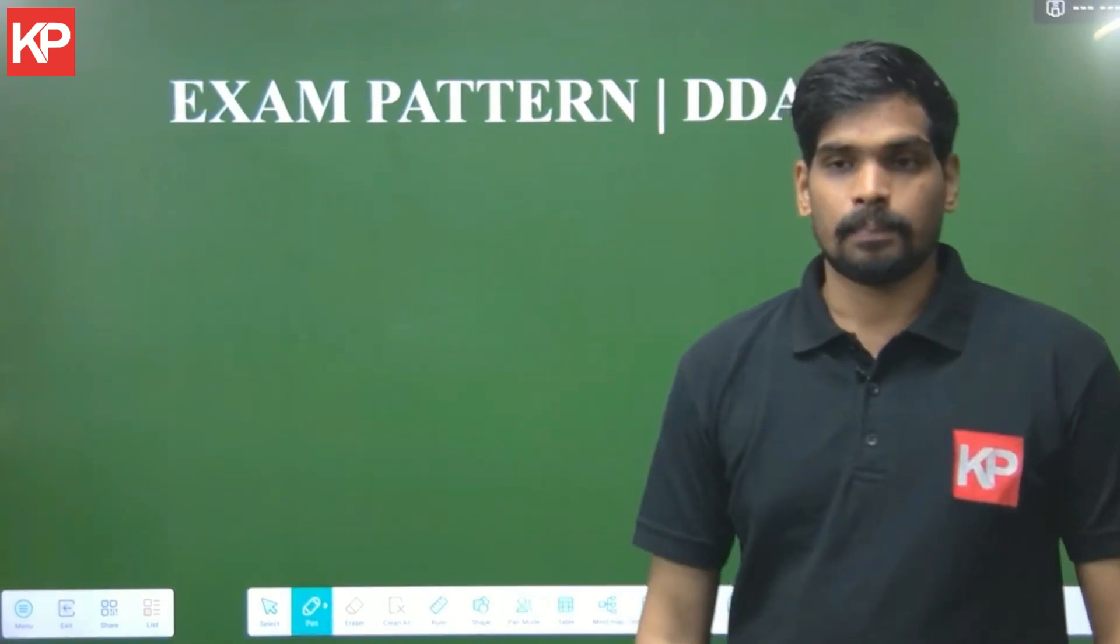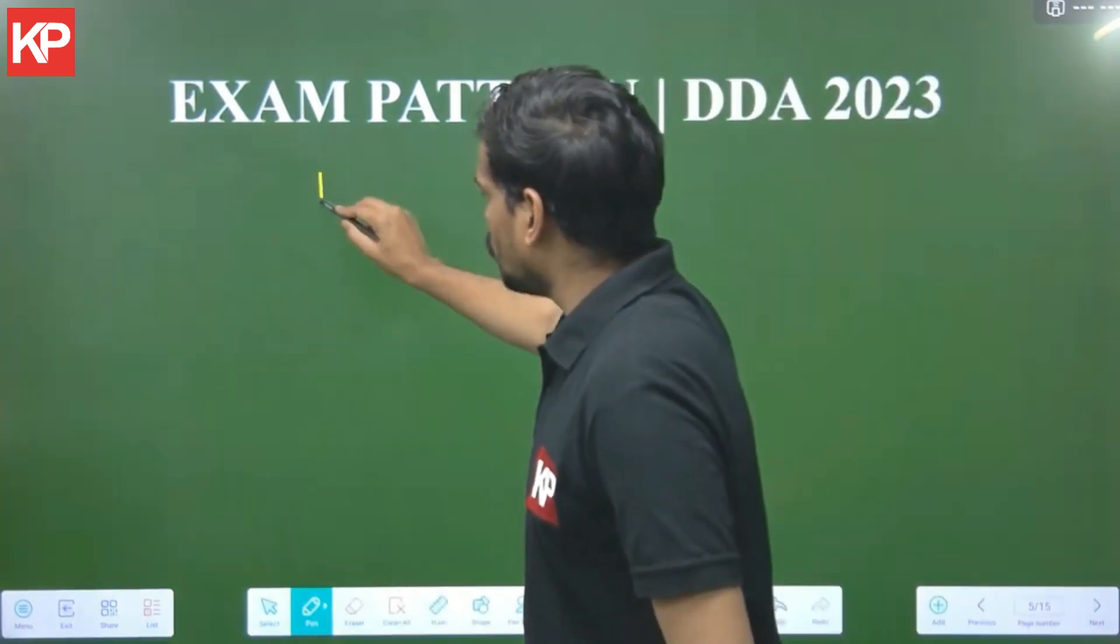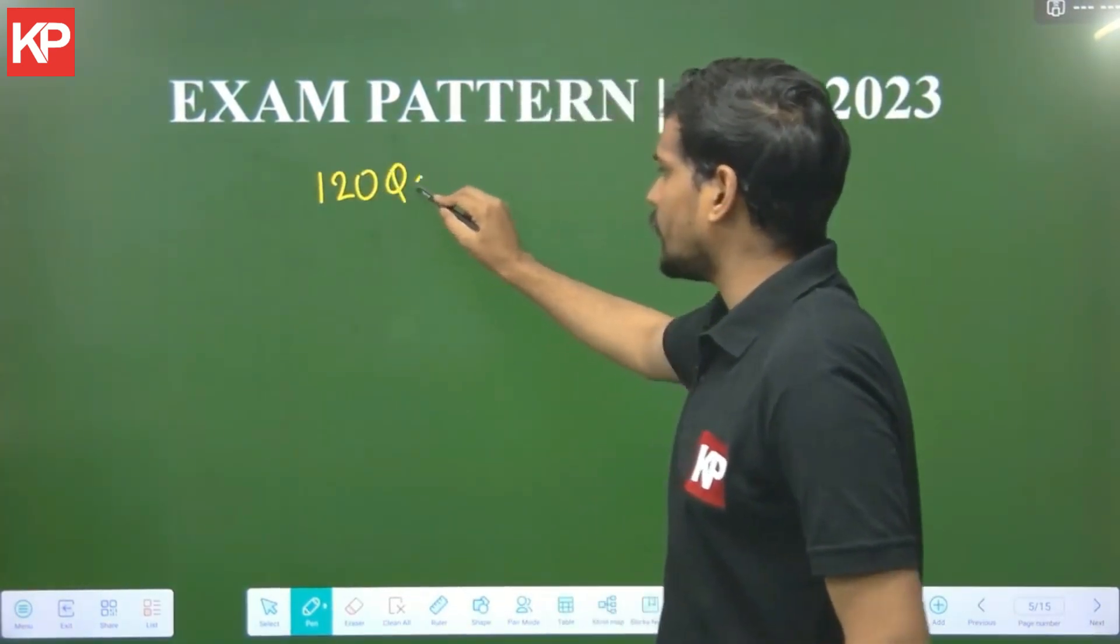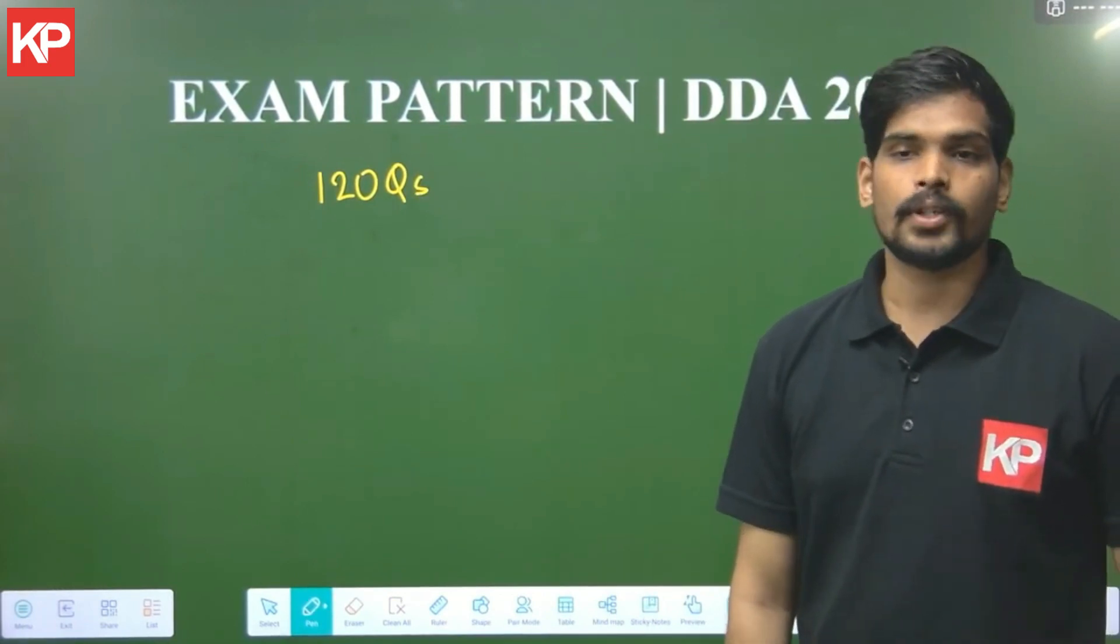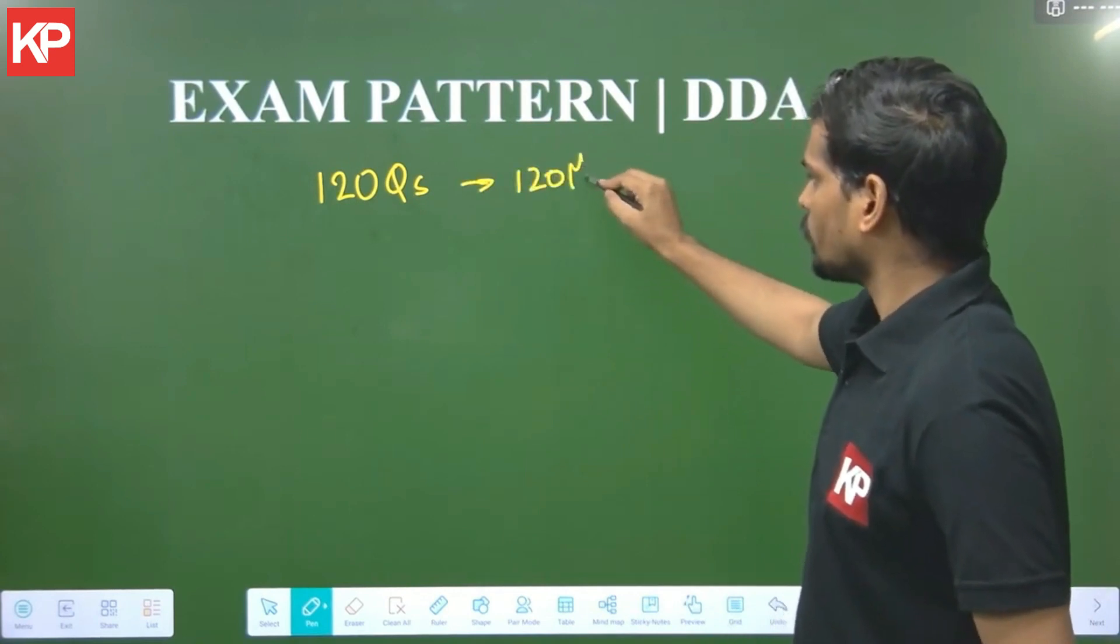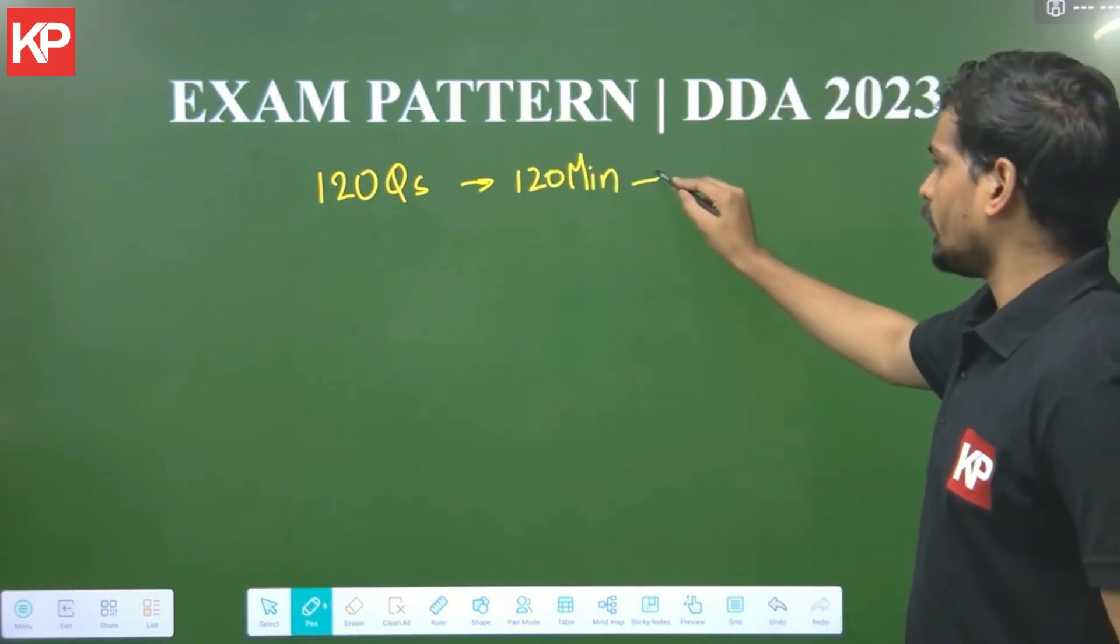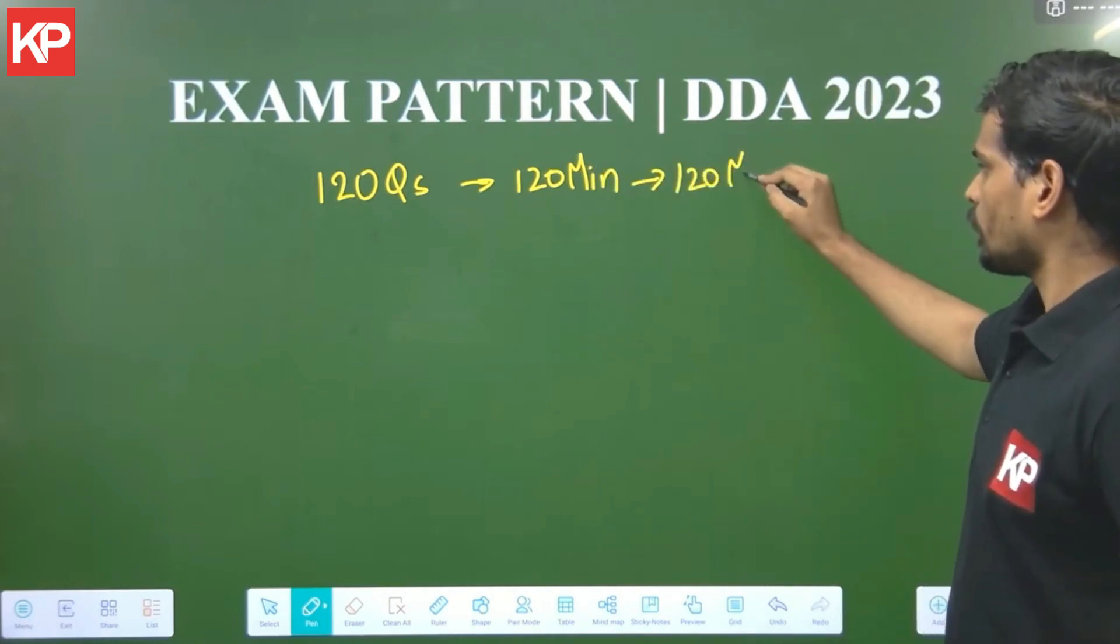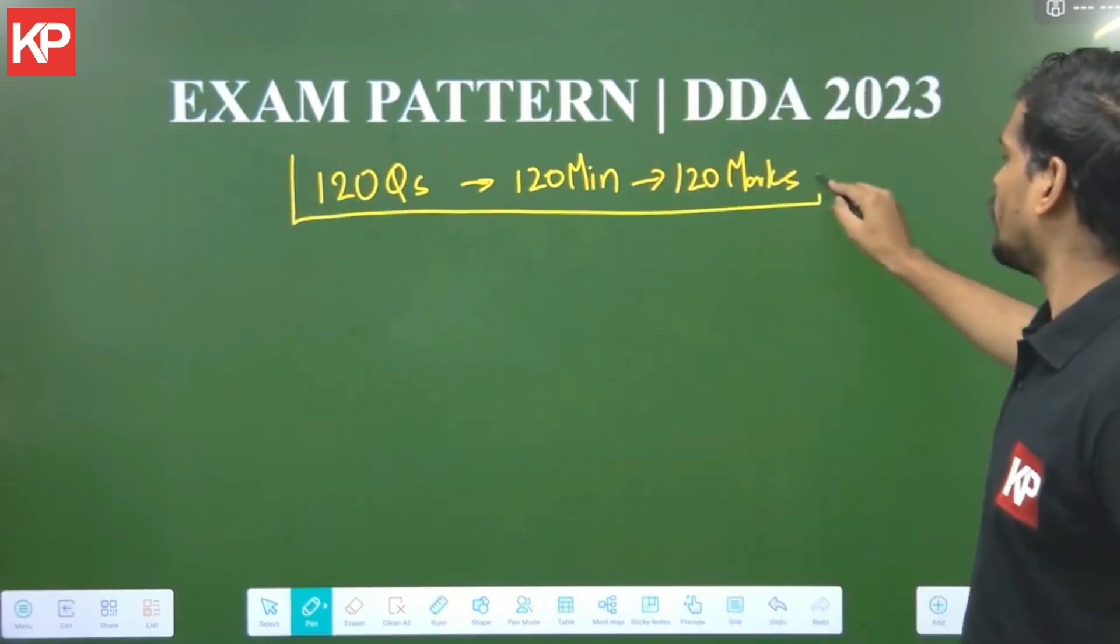So there are two parts, part 1 and part 2 in the examination. However, let me first give you an overview. There will be a total of 120 questions in this particular examination and the duration of this exam will be 2 hours. It's a 2 hour exam. So that is 120 minutes and the total weightage of this question paper will be 120 marks. 120 minutes, 120 marks for 120 questions.